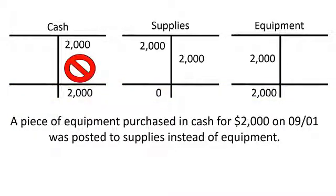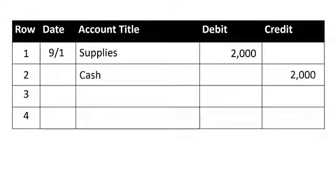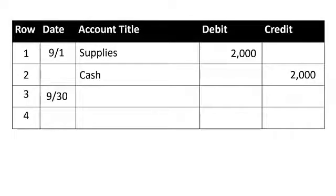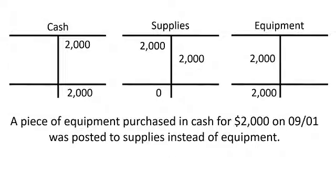So if you look at the totals between these two transactions, we have a credit to cash and a debit to equipment — exactly what should have happened in the first place. Now let's move over to the general journal and look at how these two transactions would be entered. On September 1st, we originally debited supplies and credited cash for $2,000. We later realized that was a mistake, so we made a correcting entry on September 30th: we debited equipment and credited supplies.